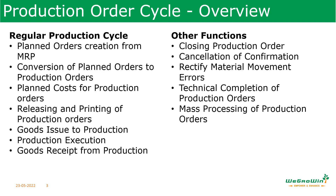Once we do all these things, there are subsequent functions which have to be done after the production is completed. Those functions include closing of the production order, cancellation of production order confirmation, rectifying material movement errors, technical completion of production orders, and mass processing of production orders.